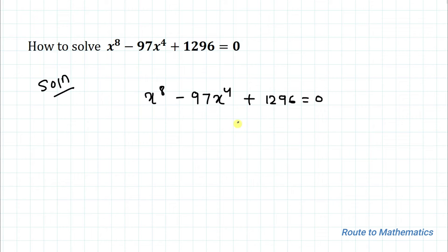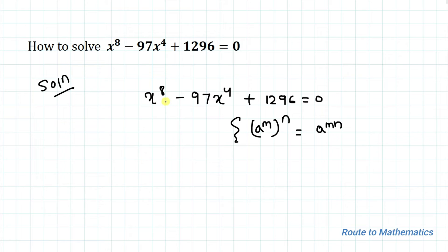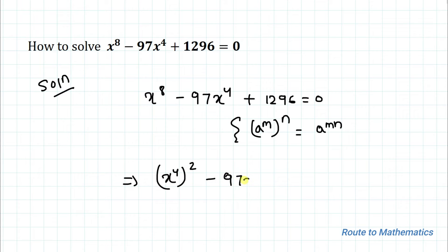In the next step we apply the exponential law: a to the power m, whole to the power n, equals a to the power m·n. So x to the power 8 can be written as x to the power 4, whole to the power 2, minus 97 x to the power 4 plus 1296 equals to 0.